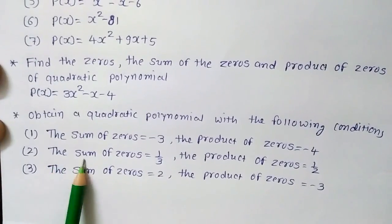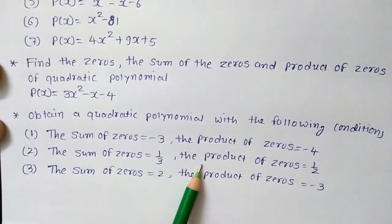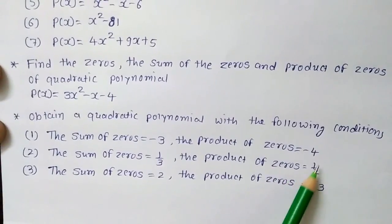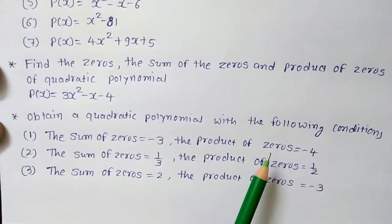Second question, the sum of the zeros is given 1 upon 3 and the product of the zeros is given 1 upon 2. You have to go with the same way.